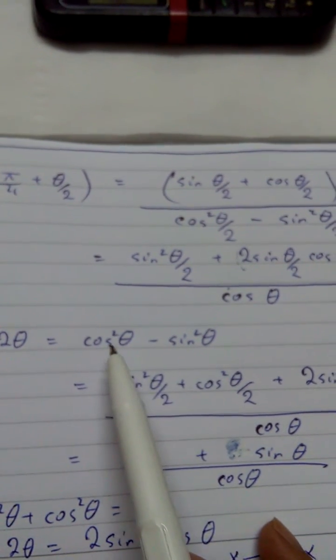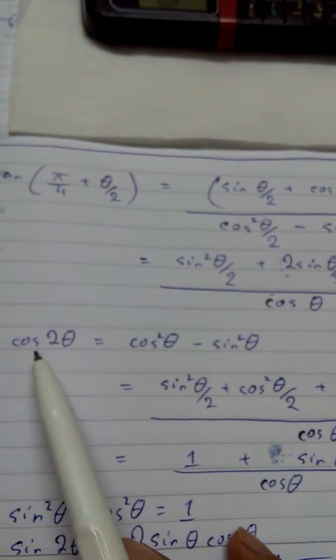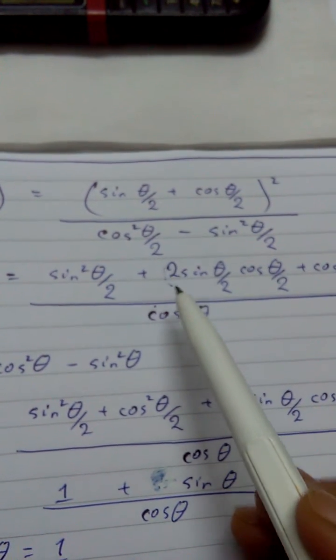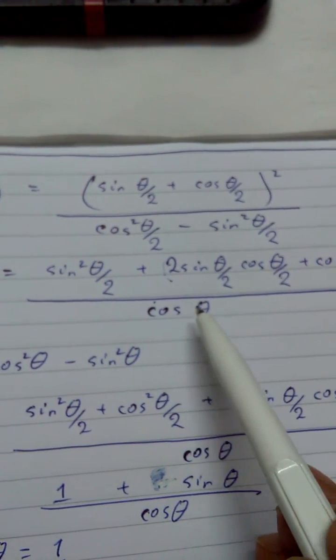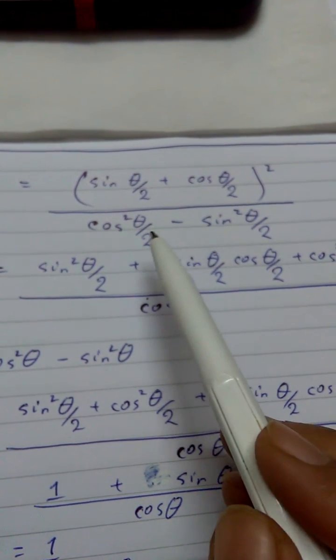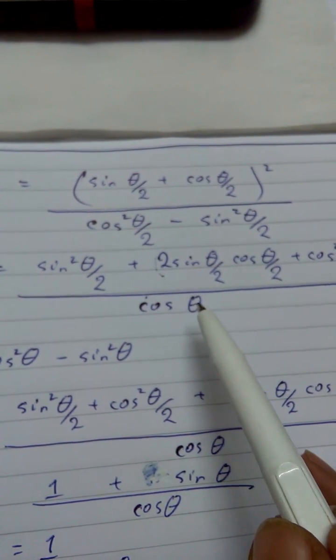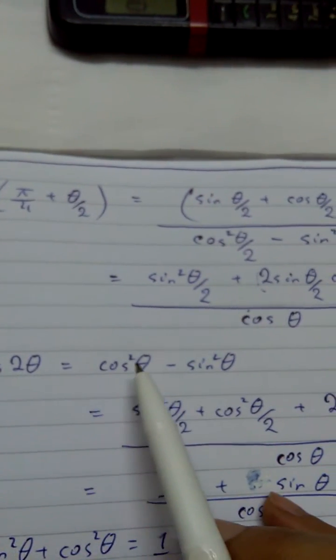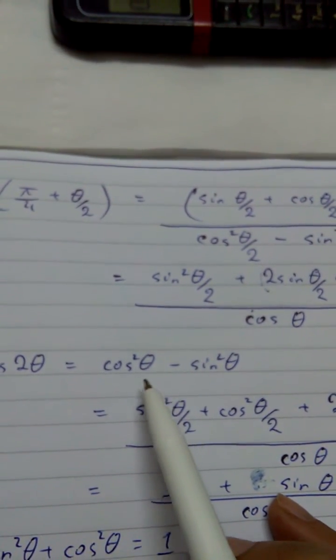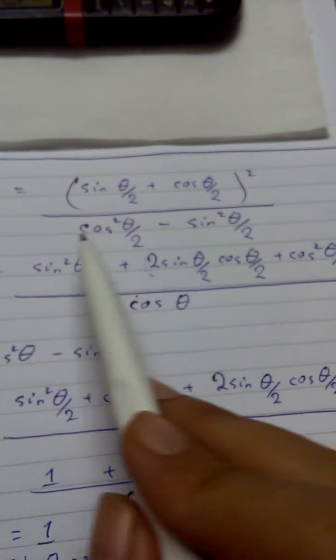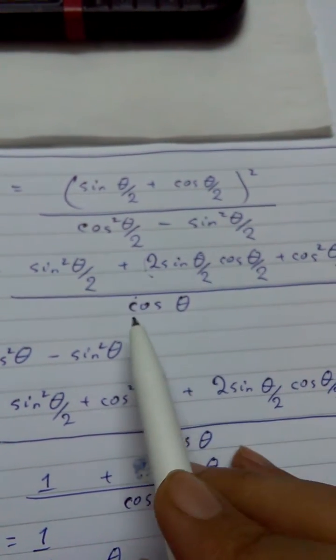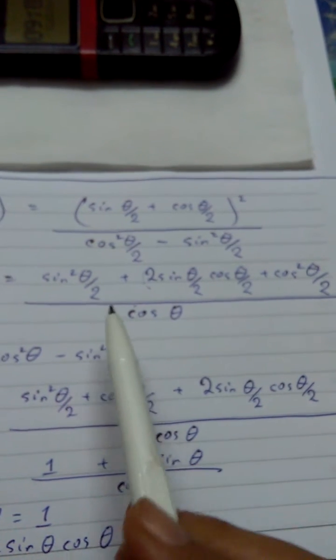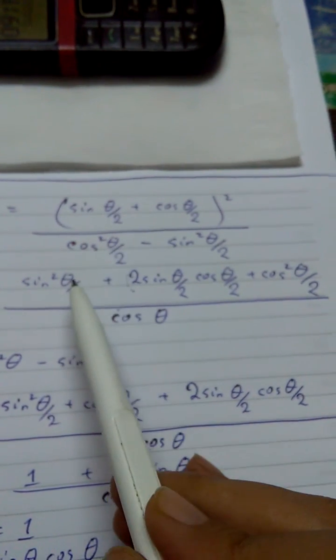And this is the formula of the double angle of your cosine. So cos² θ/2 minus sin² θ/2 gives you cos θ. So this denominator can be replaced by cos θ very confidently over here.